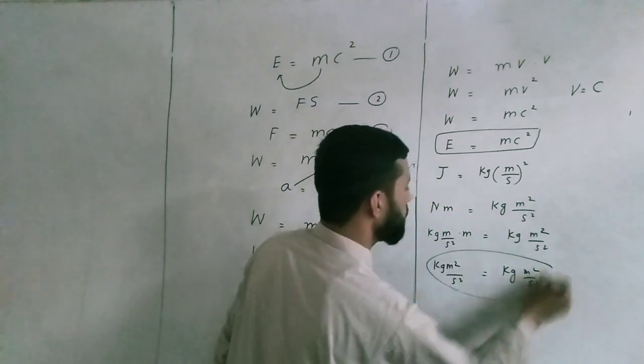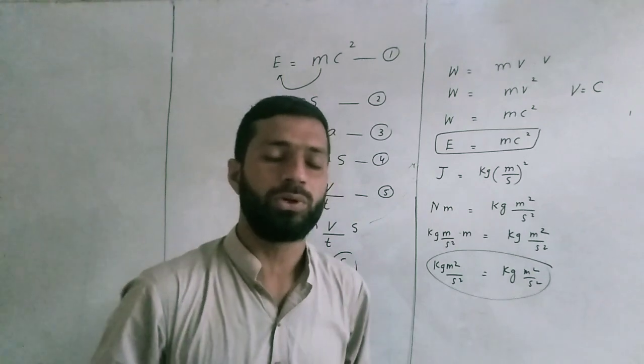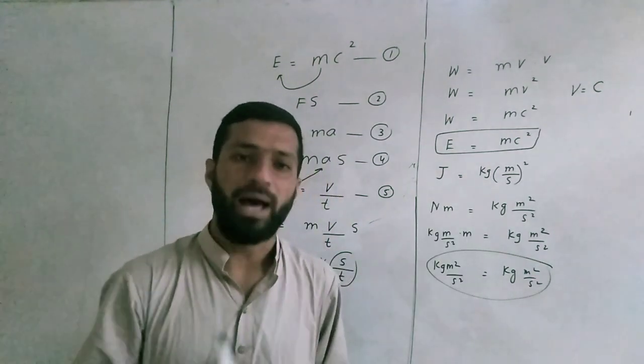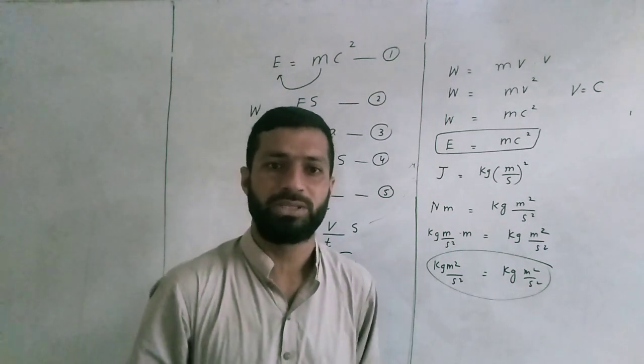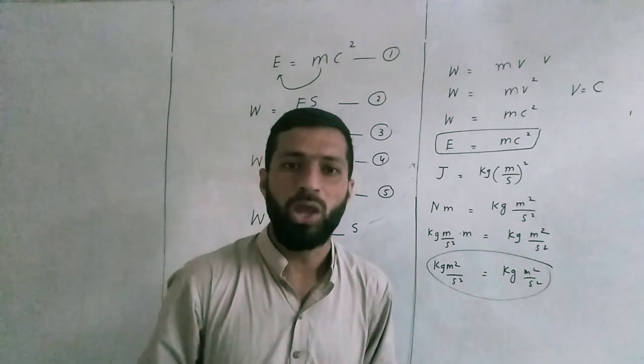So if we put c squared, then the left hand side equals the right hand side. Our principle of homogeneity is followed. Our left hand side dimension equals the right hand side dimension.